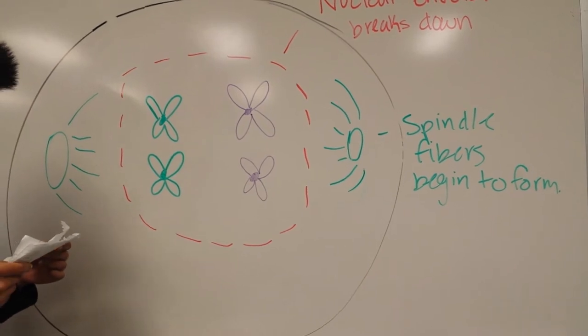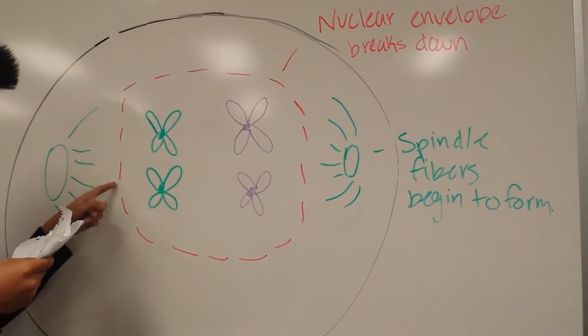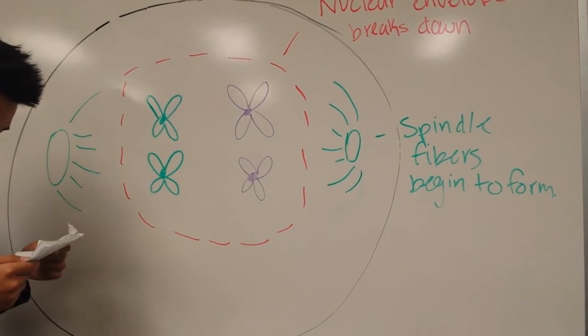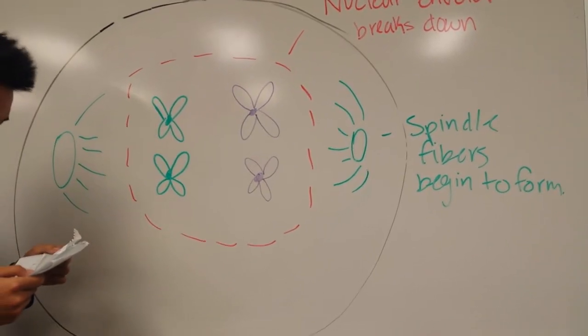DNA condensation occurs. This is when the nuclear envelope disappears and the spindle starts to form. The chromosomes are visible as tetrads.